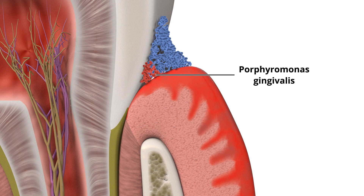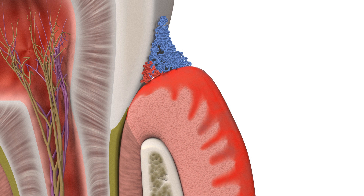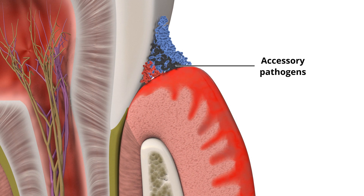shown here in red, is key to the disease process. It subverts or dysregulates the host's immune system, causing the host's immune system to become self-destructive. This subversion allows the emergence of other, accessory pathogens in the plaque, shown here in black.